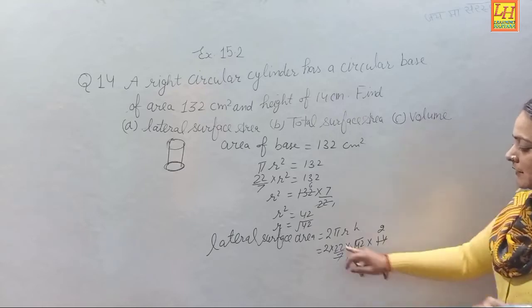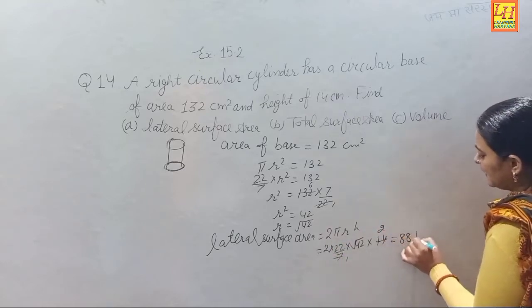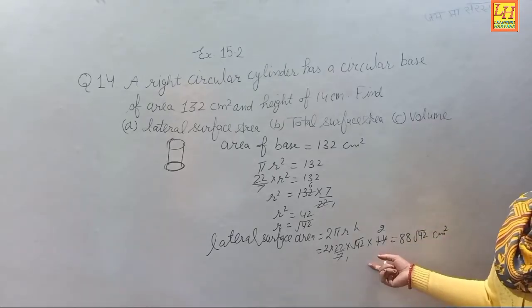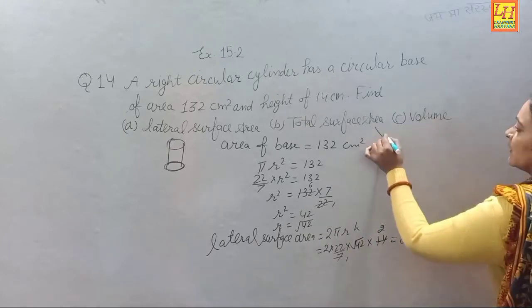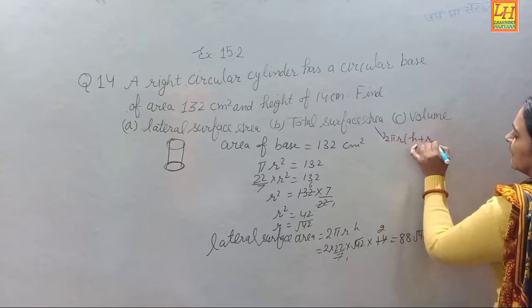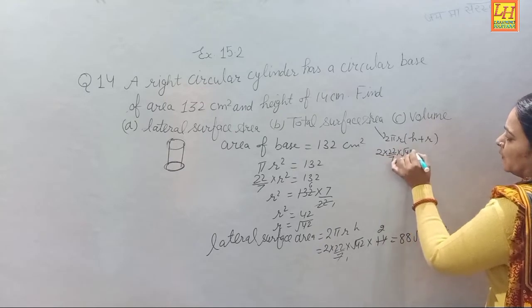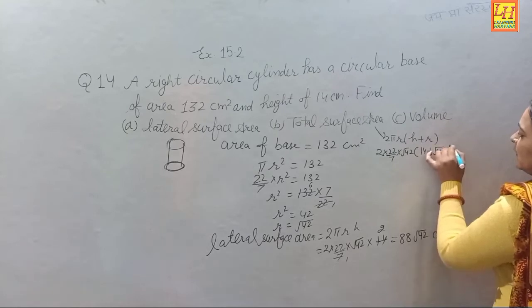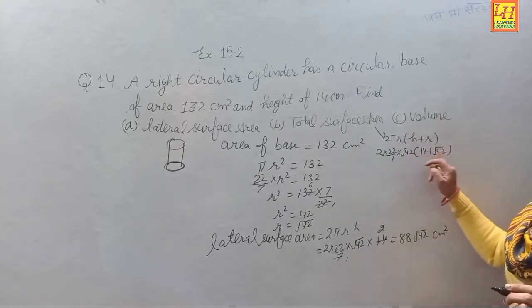Lateral surface area = 2πrh = 2 × (22/7) × √42 × 14 = 88√42 square centimeters.